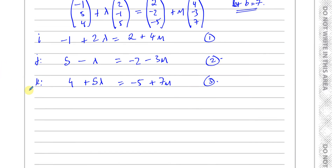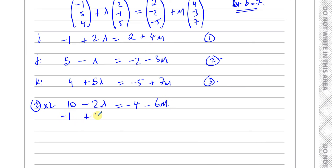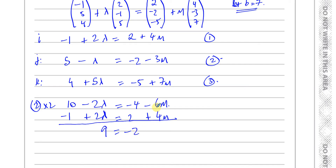Taking the first two equations: I'll multiply equation 2 by 2 to get 10 minus 2 lambda equals minus 4 minus 6 mu. Adding this to equation 1 (minus 1 plus 2 lambda equals 2 plus 4 mu) eliminates the lambdas: 9 equals minus 2 minus 2 mu. So 2 mu equals minus 11, therefore mu equals minus 11 over 2.